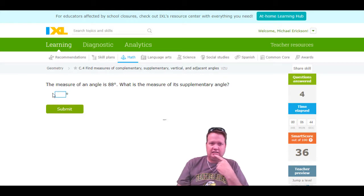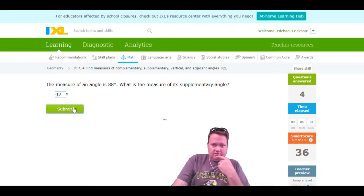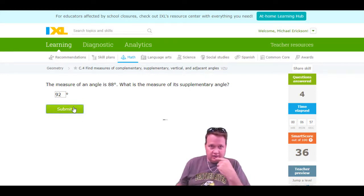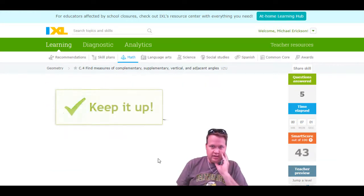The measure of an angle is 88. Its supplement is going to be 92, just going to go 180 minus 88. I'm just going to take that, or did I have to click it again? There we go. Keep it up.